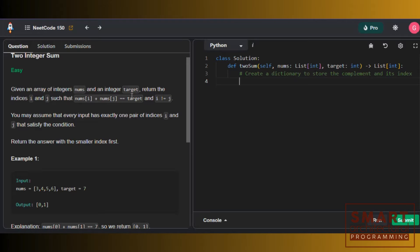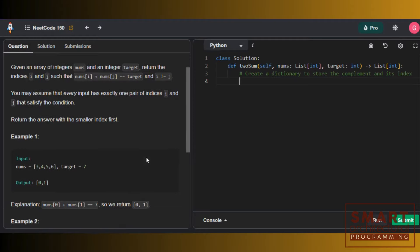We can also assume that every input has exactly one pair of indices, i and j, that satisfy the condition. There's only one pair that can satisfy the target number. We return the answer with the smaller index first and the larger index later.